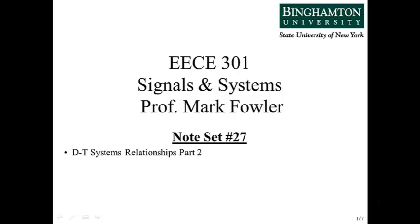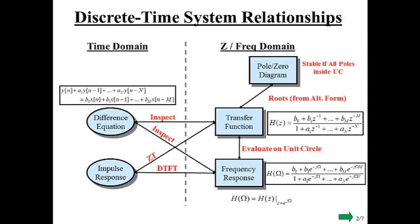Okay, so here is the second part of discrete-time system relationships. This is where we're going to really see the whole interaction of all of these different representations that we've been talking about. So this diagram sums up all the different things that we've been looking at so far. We've seen lots of different ways of talking about our system and thinking about it.